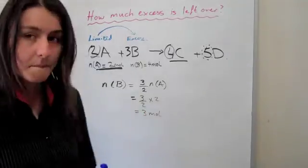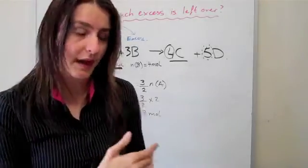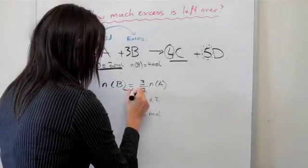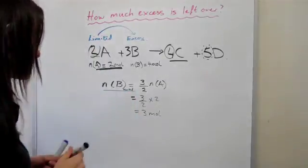So basically we have 3 mole of B reacting with A. This is how much reacted. Don't know if you can see that, but it's the amount of mole of B reacted—3 mole.